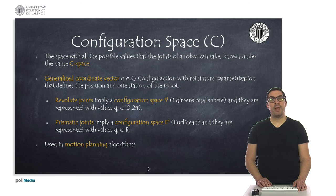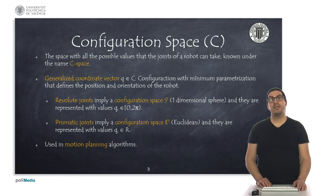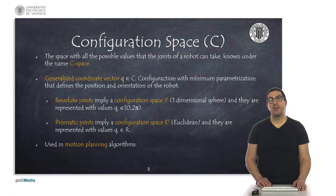Revolute joints imply a configuration space in S1 and are represented with values between 0 and 2π, although some joints may have physical limits and the range might be smaller. On the other hand, prismatic joints imply a configuration space in R1 because they are linear and therefore can take real values. The robot configuration space is widely used in motion planning problems, mainly because the robot can be treated as a simple point defined by the generalized coordinate vector Q.